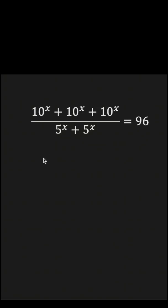How can we solve this equation? Let's first write the numerator as 3 times 10 to the x, and we'll write the denominator as 2 times 5 to the x.